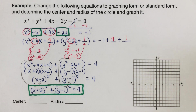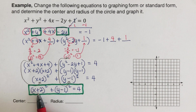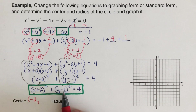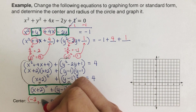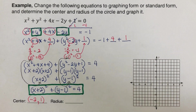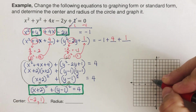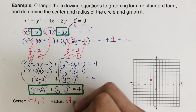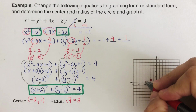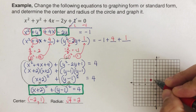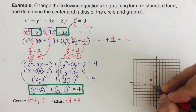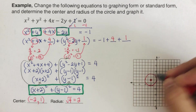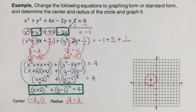From this standard form we can identify the center and radius. We switch the sign of each number inside the parentheses: the center is (negative 2, positive 1). The radius is the square root of 4, which is 2. So from the center we count 2 units up, down, left, and right to plot the four points, and then sketch the circle through them.